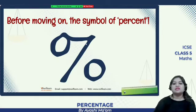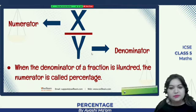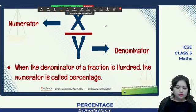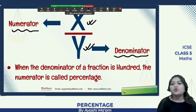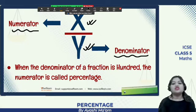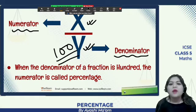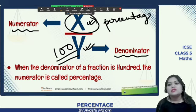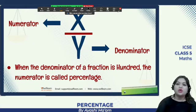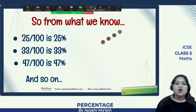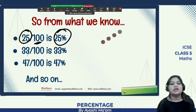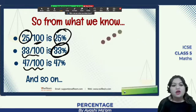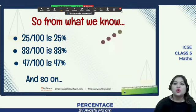See, before moving on, the symbol of percent. See, in the symbol of percent only you can see 100, right? This is like a 1 and these two circles are like the two zeros. So what do you see in a fraction? It's a horizontal line. The upper line is X, the lower line is Y. So the upper part is the numerator, the lower part is the denominator. So whenever we want the denominator part to be 100, this one I have already told you, right? So from what we know, if you have 25 by 100, here the denominator is 100, so then we can say 25 percent. 33 by 100, we can say 33 percent. 47 by 100, we say 47 percent, and so on.